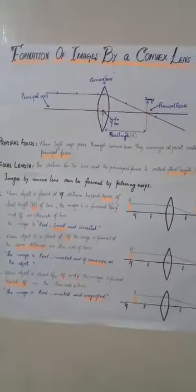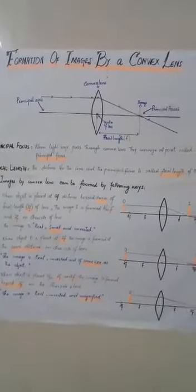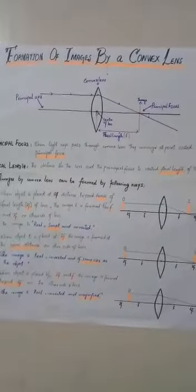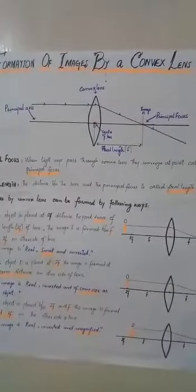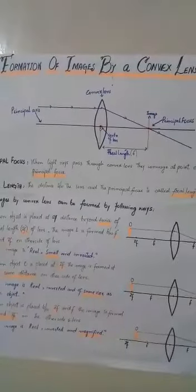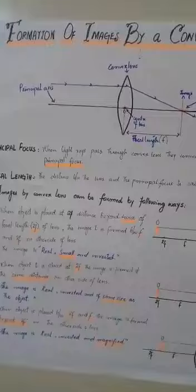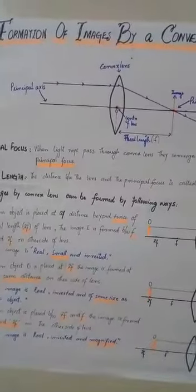Assalamualaikum dear students, it's me Ms. Faiza Sheik. Today we are going to discuss the formation of images by a convex lens. As we discussed in our previous lecture, what is a convex lens and how it produces images. A convex lens is a converging lens and it produces real images.